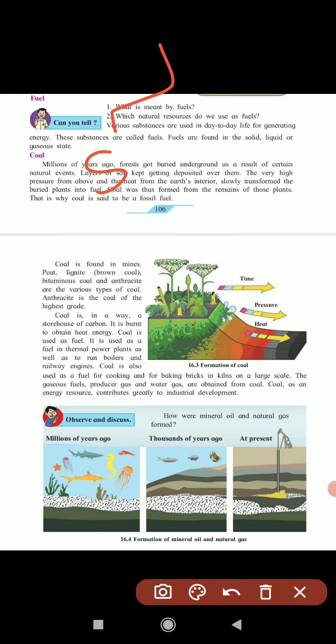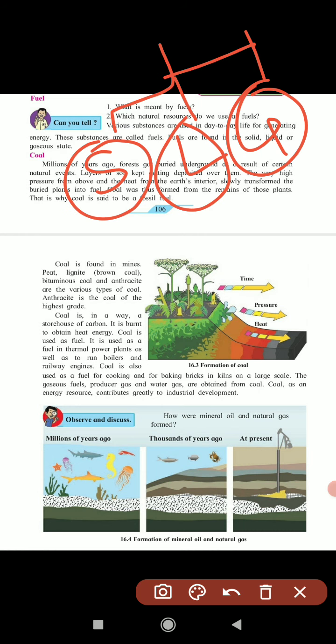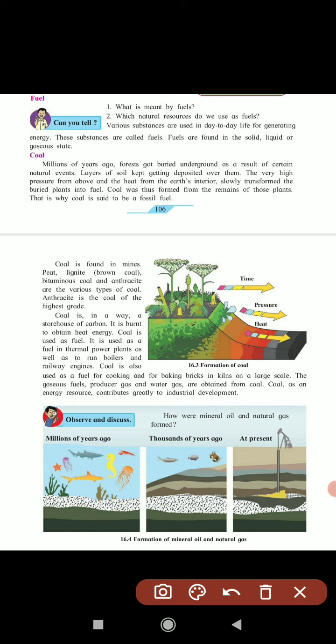Fuels are found in three types: solid, liquid, and gases. We will discuss solid, liquid, and gases one by one—what are their uses, what are their types, and how we are getting them. Now, coal is a solid fuel which we are using for many years.